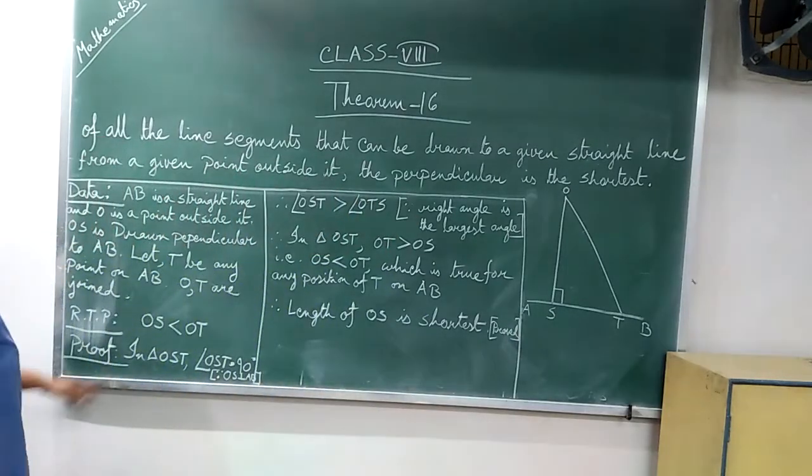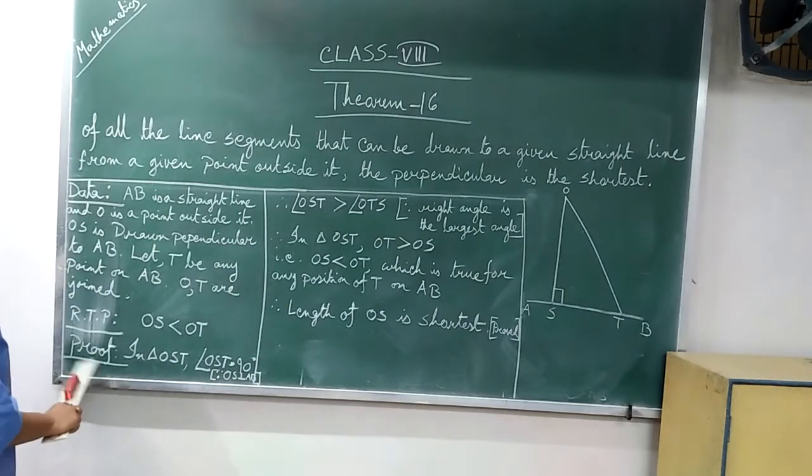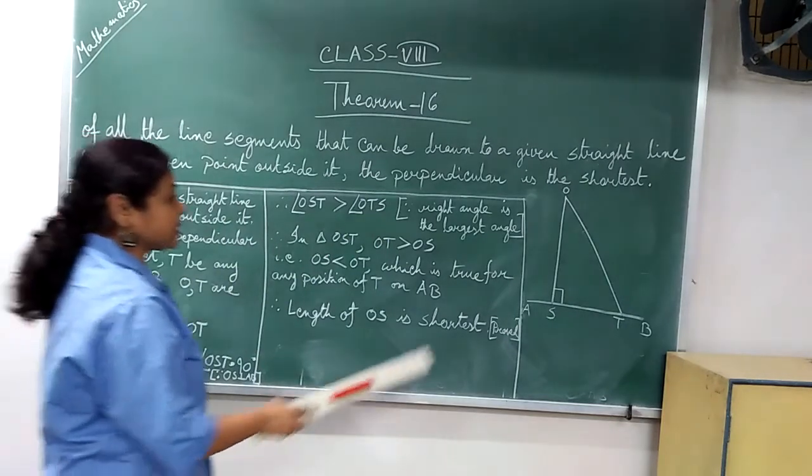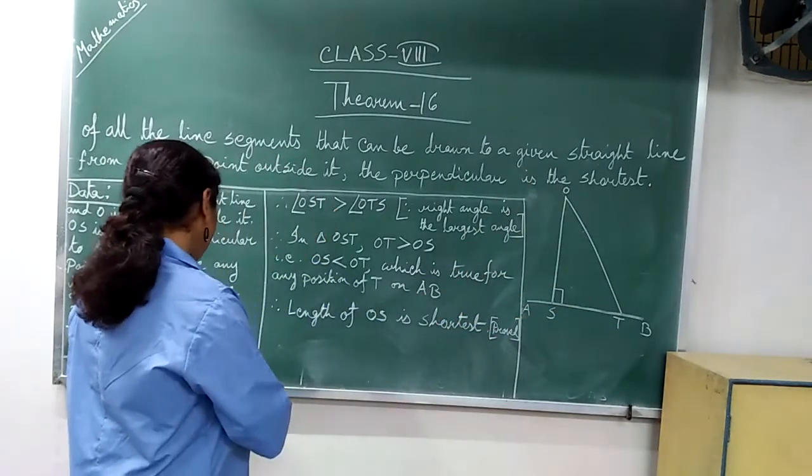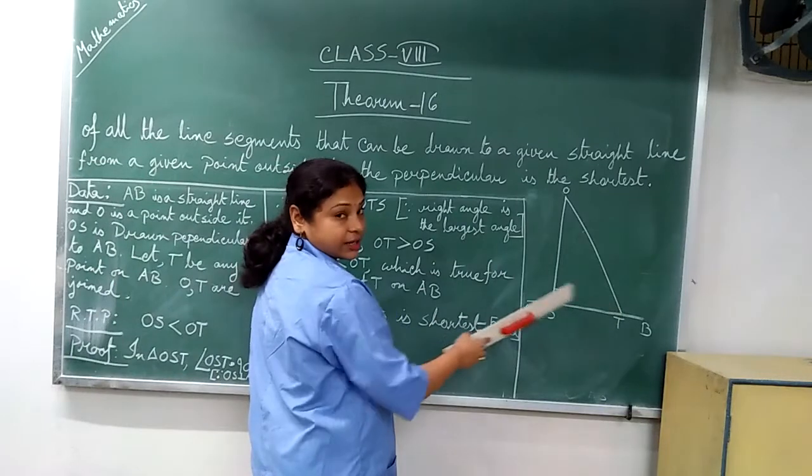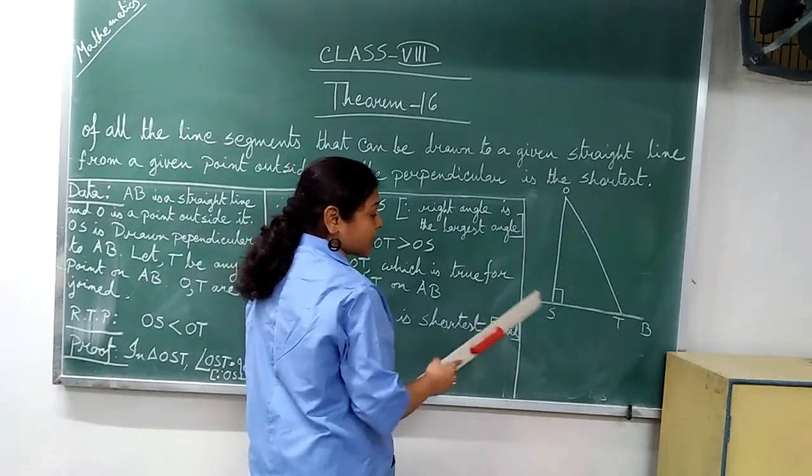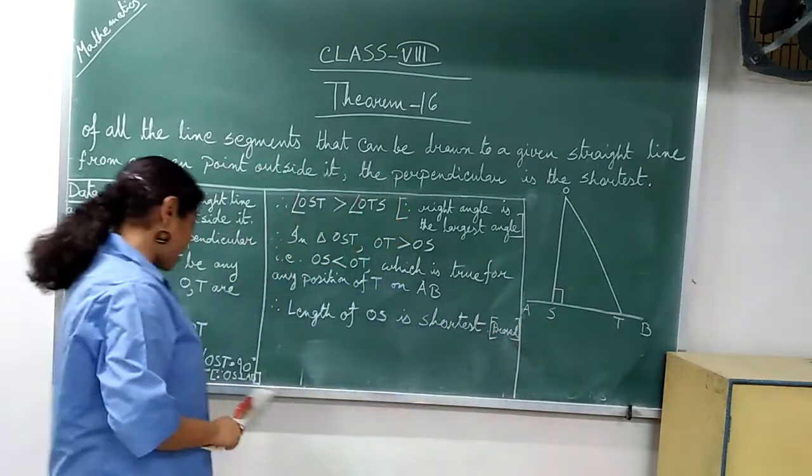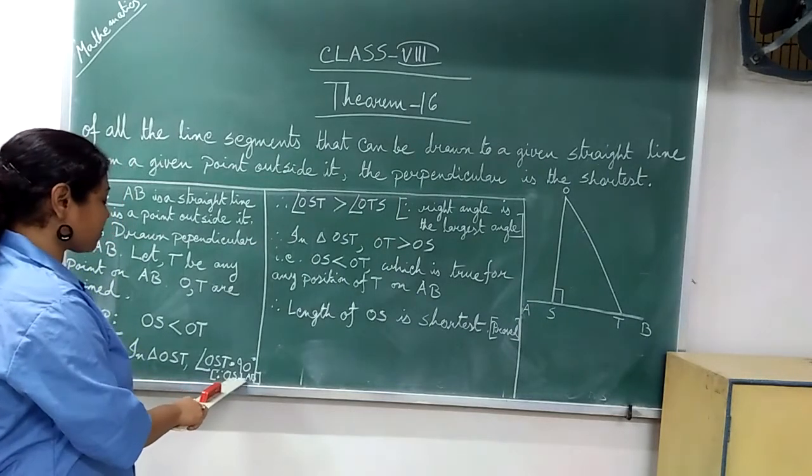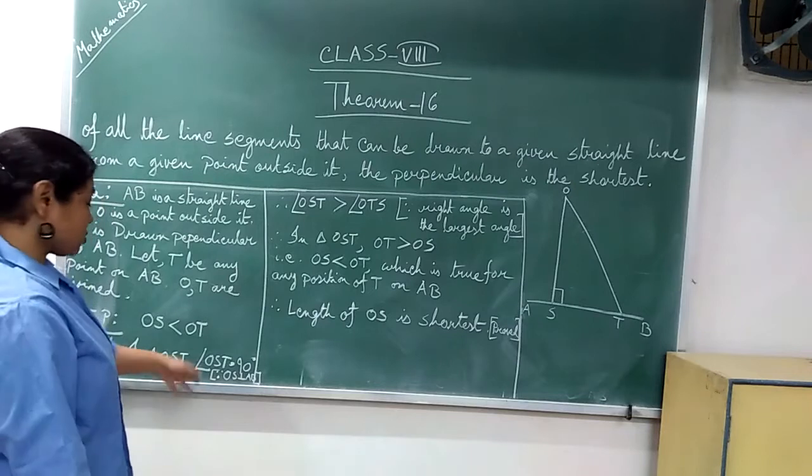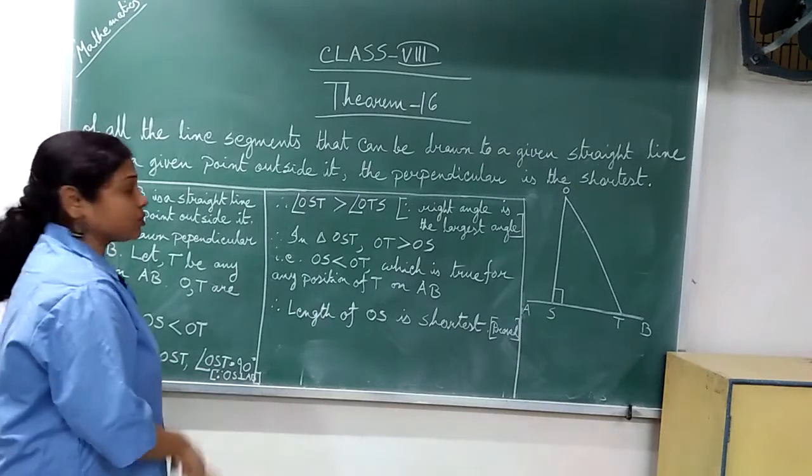Now proof. Here no construction is there. So prove: In triangle OST, angle OST is 90, that is right angle. Why? Because OS perpendicular to AB. Since OS perpendicular to AB, therefore angle OST greater than angle OTS.